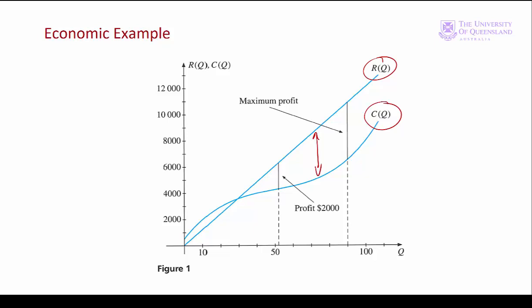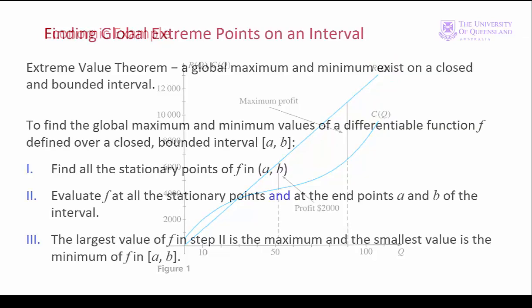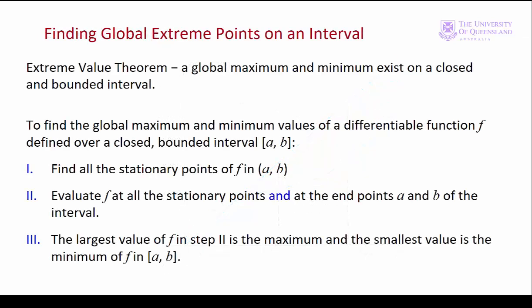Let's recap on what we need to find a global extreme point. First of all, the extreme value theorem tells us that if we have a closed and bounded interval, which we have, then a global maximum and a global minimum will exist. To find that global maximum and minimum, we go through three steps.